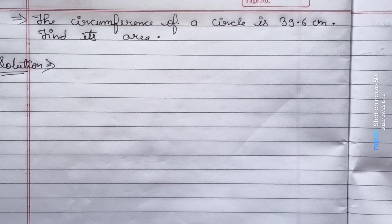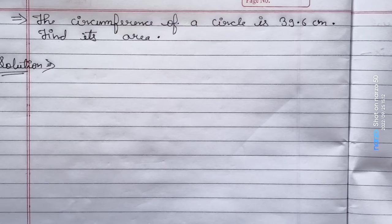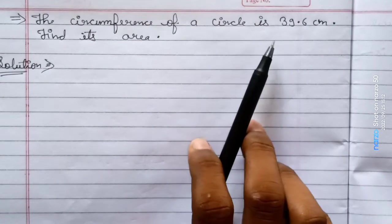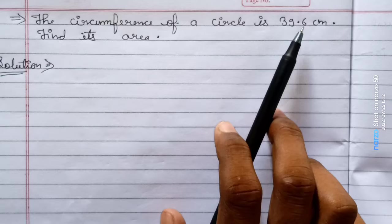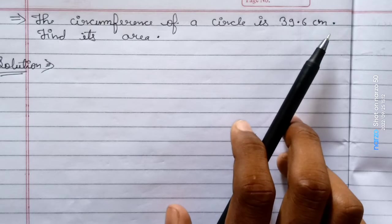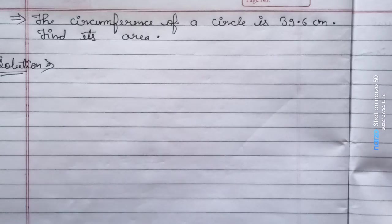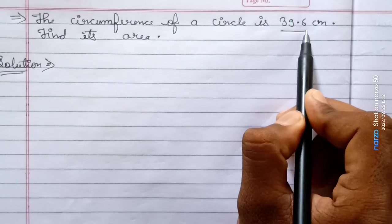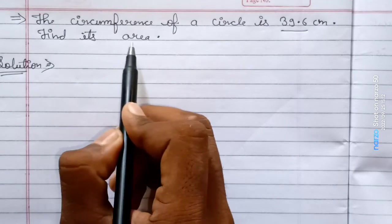Hello friends, welcome back to my YouTube channel Mr. Perfect. Today we are going to solve a question: the circumference of a circle is 39.6 centimeters. Find its area.